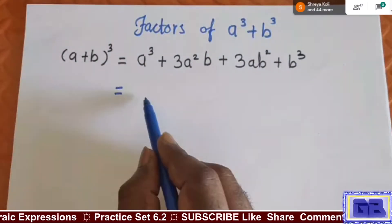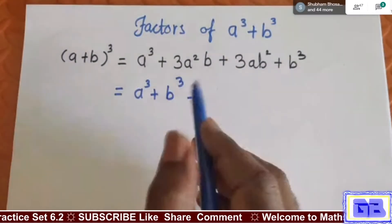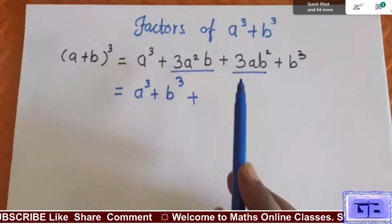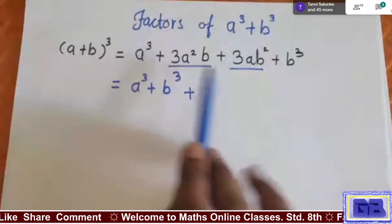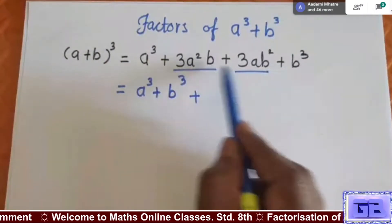Put equal sign, a³ and here b³. We will take first a³ + b³. After giving plus sign, this term and this term is left. We have to see what things are common here.